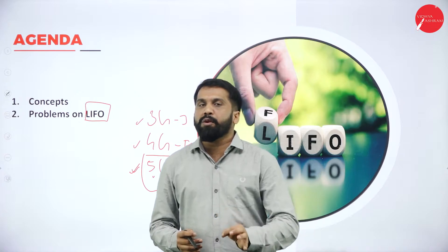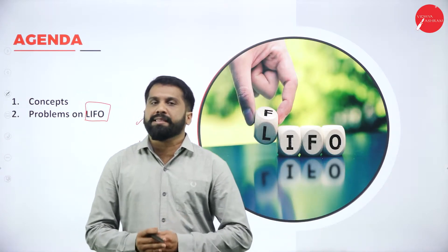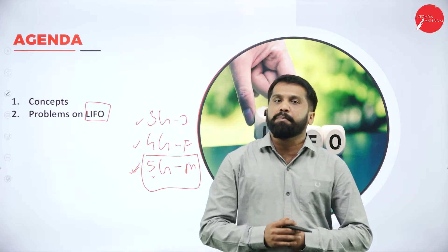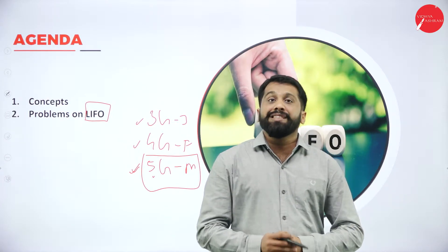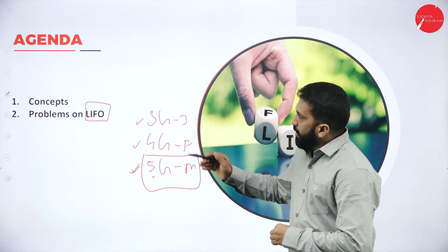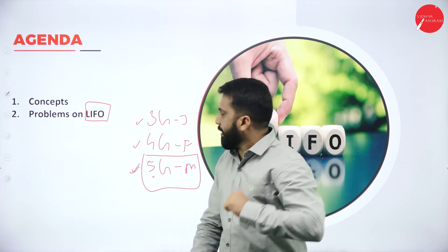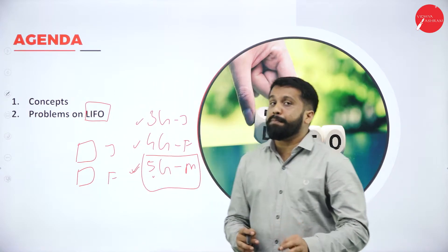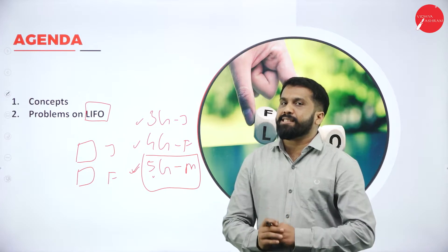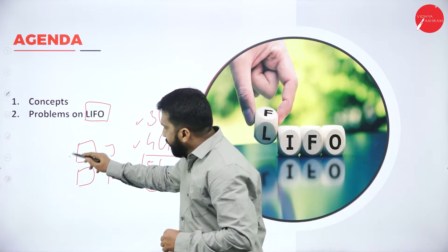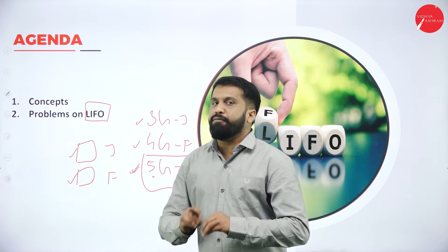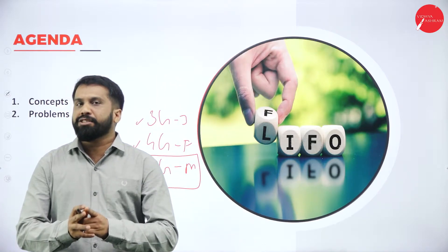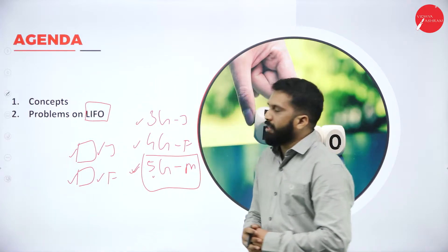I hope you understood what is LIFO method. In a problem, how do we implement this? The last or most recent item you have purchased or received, you will sell it first. In FIFO, we used to open the first box. Like, if there are two boxes — one bought in January, one bought in February — when an issue or sale comes, you sell the January one first, then February. But in LIFO, we go for the February box first, later we go for the first box. This is called your LIFO method.